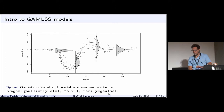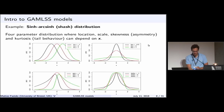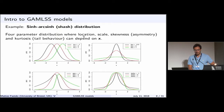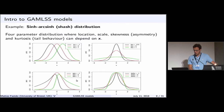Another GAMLSS model is one based on the sinh-arcsinh distribution, or SHASH. This has four parameters: the first controls the location or mean — changing mu simply shifts the density. The second parameter, tau, controls the scale or variance — increasing tau gives a more dispersed distribution. The third parameter controls skewness: a positive value gives right-skewed density, a negative value gives left-skewed density.